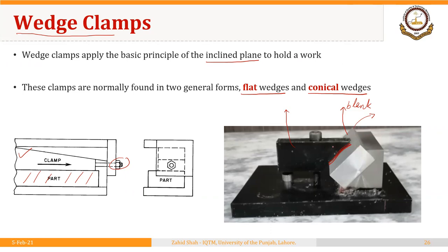Once this clamp is positioned onto the blank, we lock it using the screw to perform the machining operation. Then we unlock the screw and rotate this clamp in this direction to remove the part from the fixture. This is an example of a flat wedge clamp.